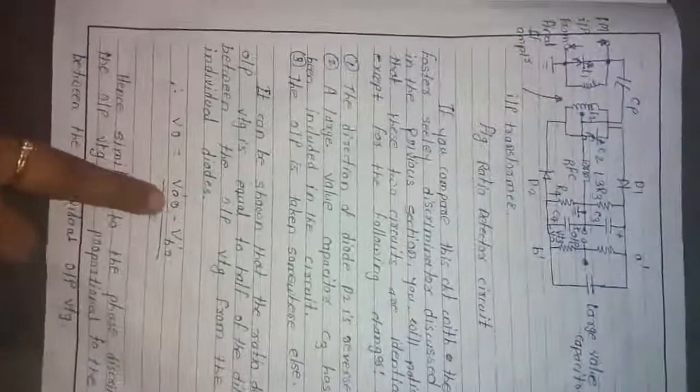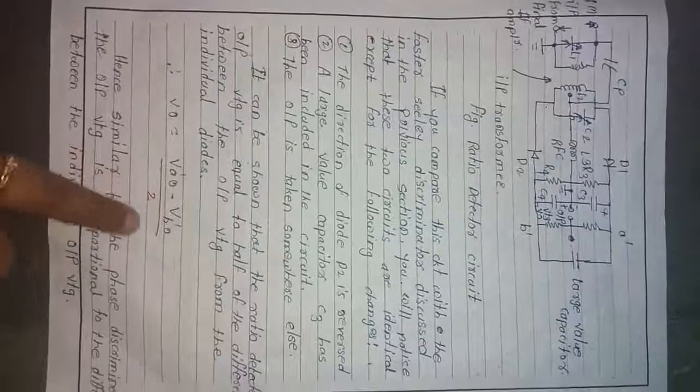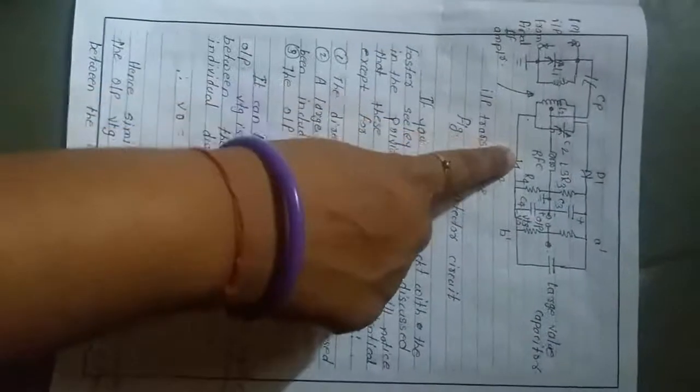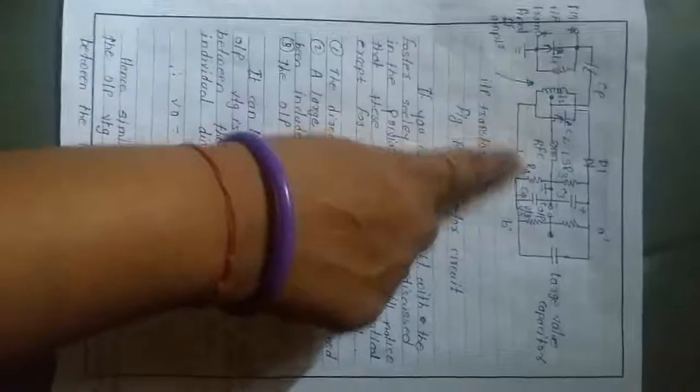It can be shown that the ratio detector output voltage V0 is equal to (VA0 − VB0) / 2. Hence, similar to the Foster-Seeley discriminator, the output voltage is proportional to the difference between the individual output voltages: VA0 for slope detector one and VB0 for slope detector two.